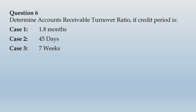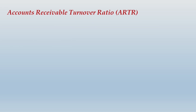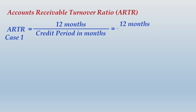I have explained you how to make the calculations directly, so there is no need to first find the average balance of debtors and then compute accounts receivable turnover ratio. That could be a formal but longer way. Let us see how to write up the answer. Accounts receivable turnover ratio (ARTR) in case 1 will be 12 months divided by credit period in months — 12 divided by 1.8 months — that comes to 6.67 times.